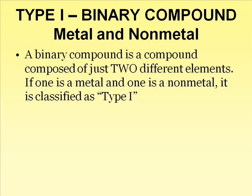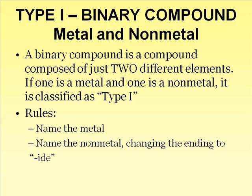A binary compound is a compound made of just two different elements. If a binary compound contains a metal and a nonmetal, I will refer to it as a Type 1. The steps for naming a Type 1 compound is to simply name the metal, which will always come first, then name the nonmetal, changing the ending to -ide.